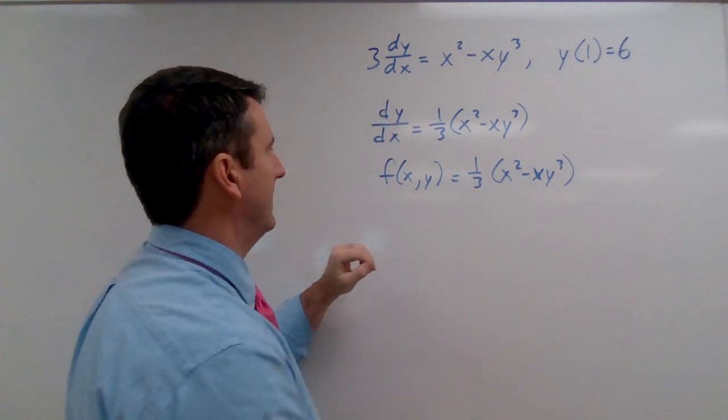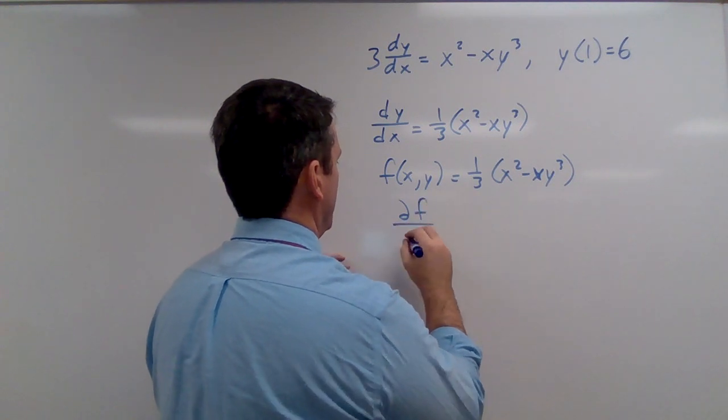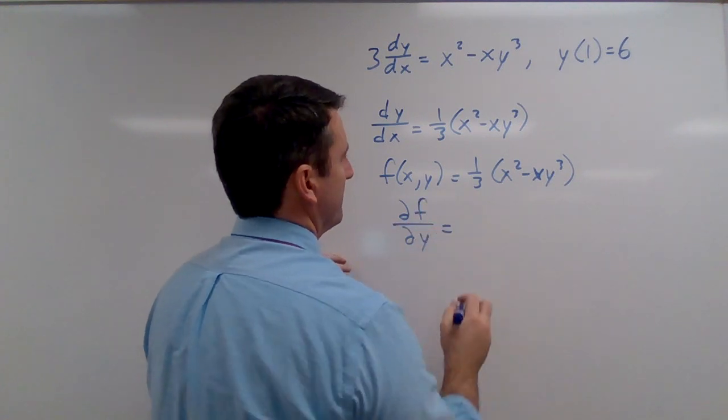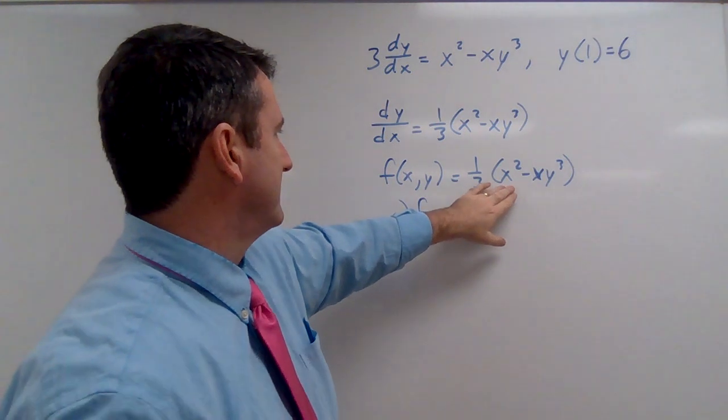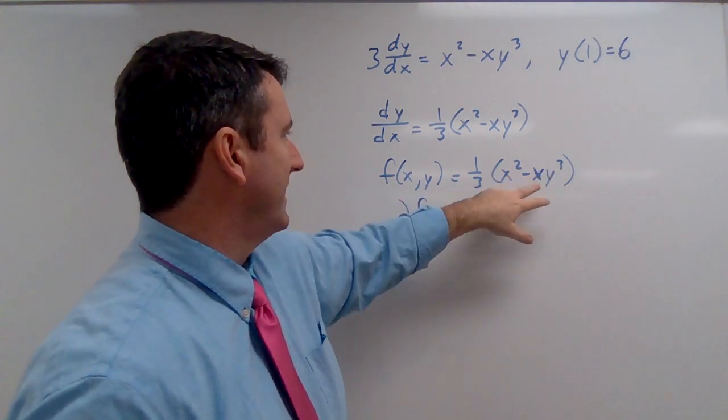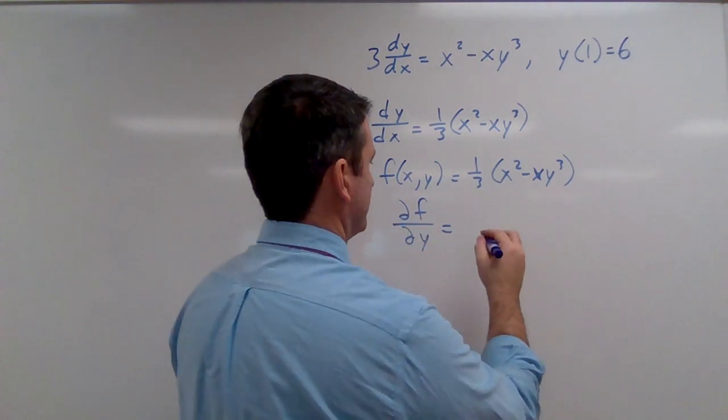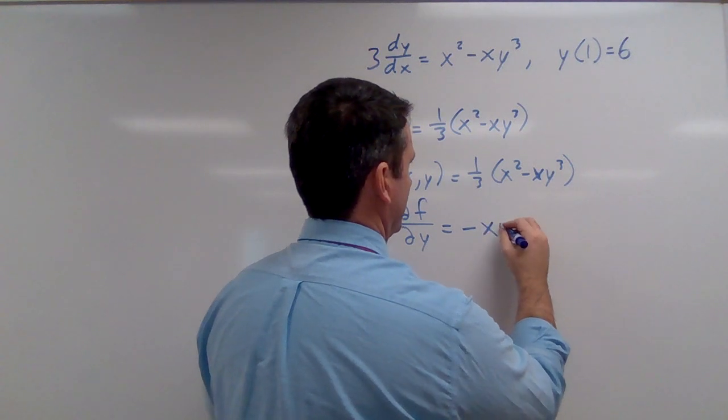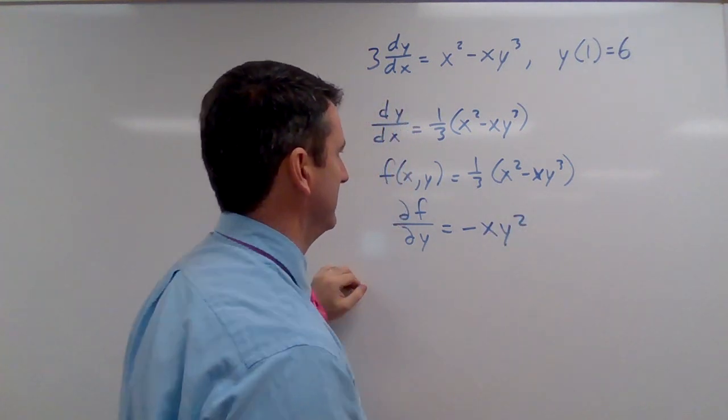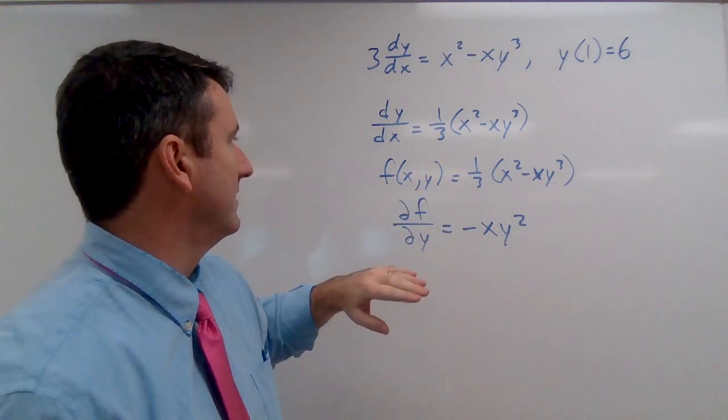And then the partial derivative of this function with respect to y—well, x is going to be constant, so that's a zero. This one, we're going to bring down the three, but then we're going to multiply that at one third. So this is going to be negative xy squared. Alright, so here's our function. Here's the partial derivative of that function with respect to the dependent variable.